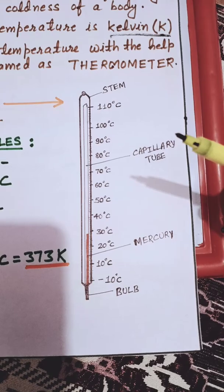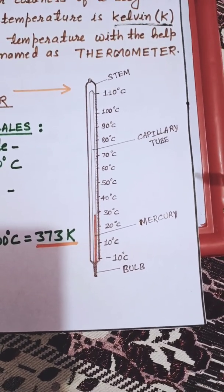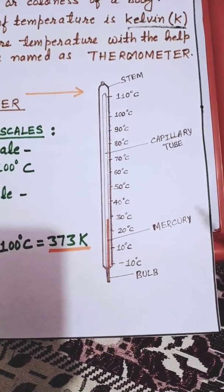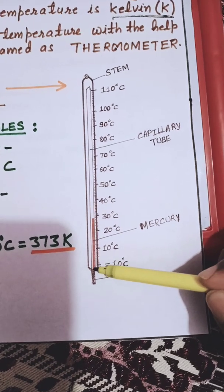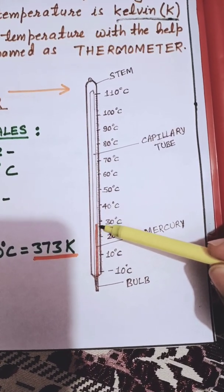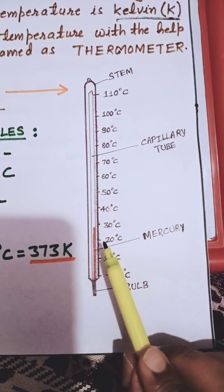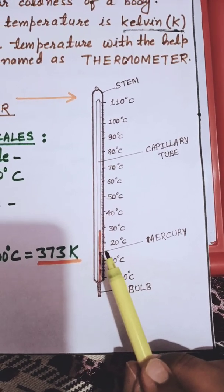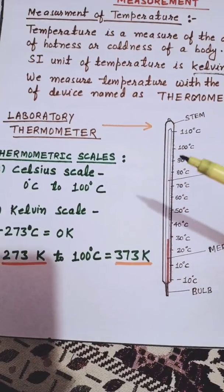The thermometer works on the principle of thermal expansion. When we measure any hot object, the mercury expands and rises in the capillary tube. Wherever the mercury stops, we read the temperature. For example, if it stops at 30 degrees Celsius, the temperature is 30 degrees Celsius. This is the description of the Laboratory Thermometer.